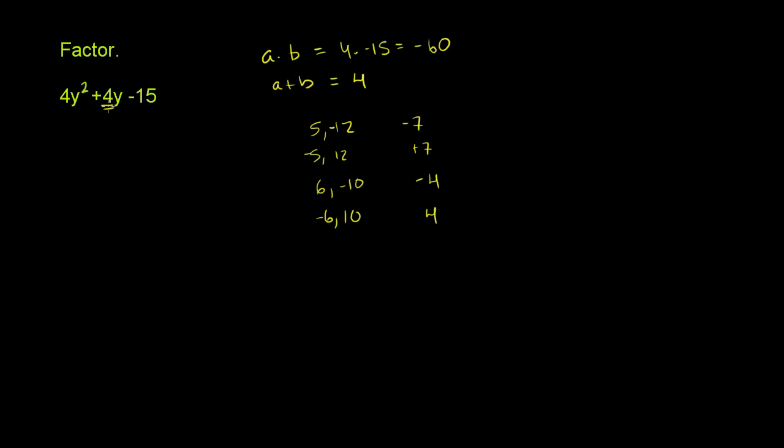Now what we want to do is break up this middle term here. The whole point of figuring out the negative 6 and the 10 is to break up the 4y into a negative 6y and a 10y. So this 4y can be rewritten as negative 6y plus 10y. Because if you add those, you get 4y. And on the other sides of it, you have your 4y squared, and then you have your minus 15. All I did is expand this into these two numbers as being the coefficients on the y.